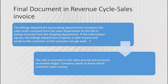Everything matches up, so the billings department prepares the sales invoice — the third document in the cycle, not the same as the sales order — and sends a copy to the customer. The sale is then recorded in the sales journal, and the accounts receivable ledger must be updated because the company needs to know specifically which customer owes money as a result of this order.